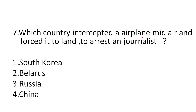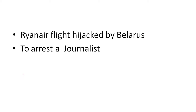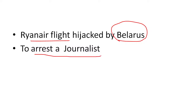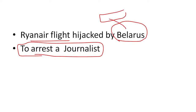The seventh question is: which country intercepted an airplane mid-air and forced it to land to arrest a journalist? Is it one: South Korea, two: Belarus, three: Russia, or four: China? The answer is Belarus — a very famous incident that surprised the entire world. A Ryanair flight was hijacked by Belarus; a military aircraft from Belarus forced the flight to land in Belarus to arrest a journalist. They will definitely ask many questions regarding this Ryanair flight incident.